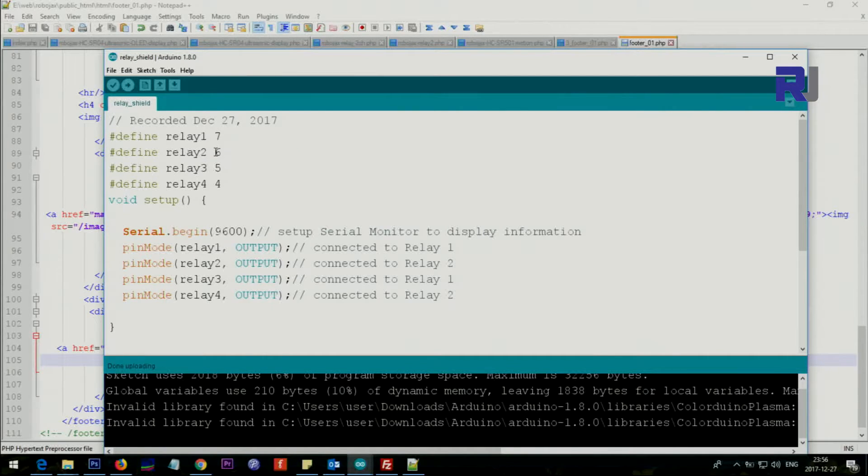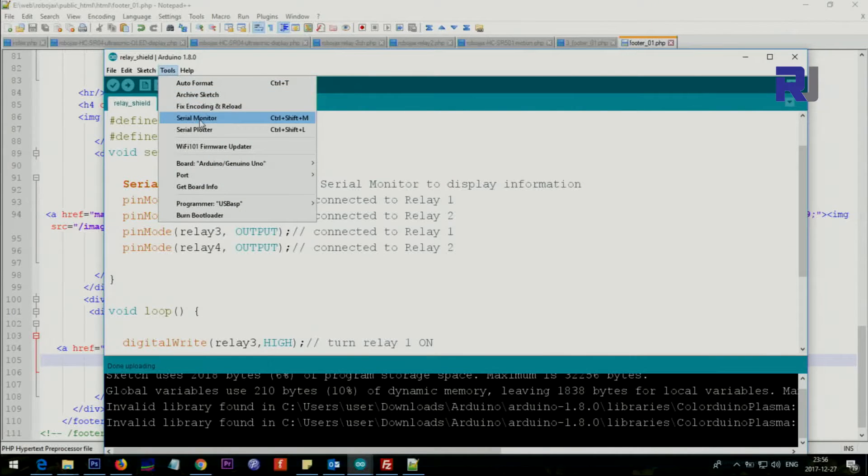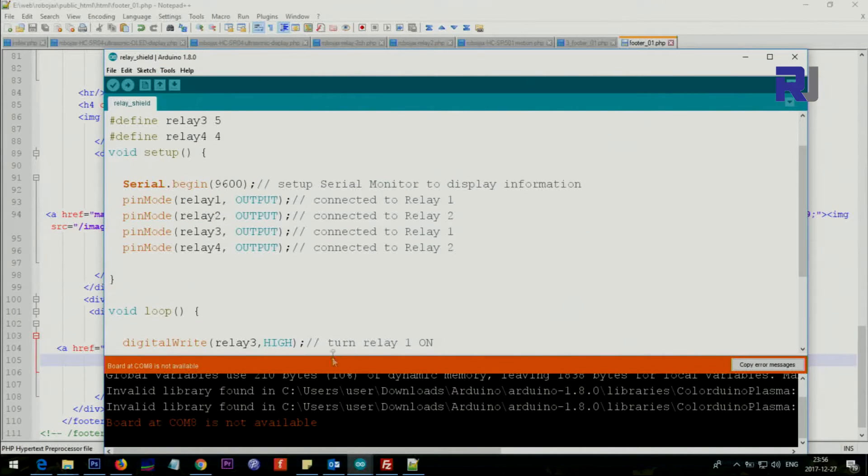Now here on the setup, inside the setup we have, I put this one with 9600 baud to show the information on the serial monitor, which you can click here serial monitor. Because now it's not connected I got error. So here I will define pin mode.